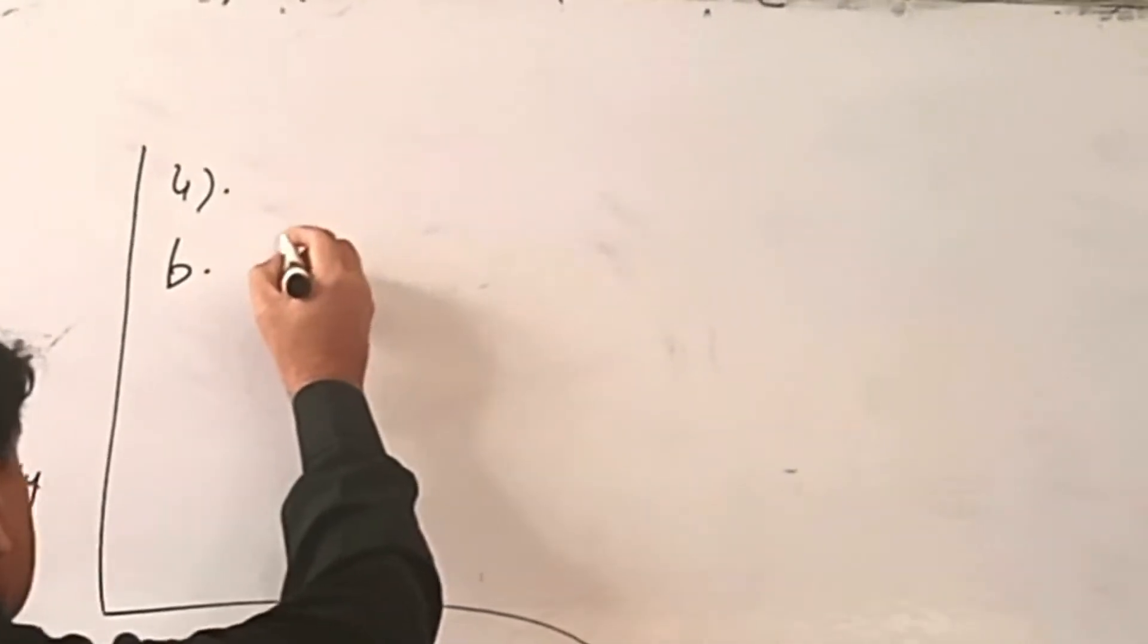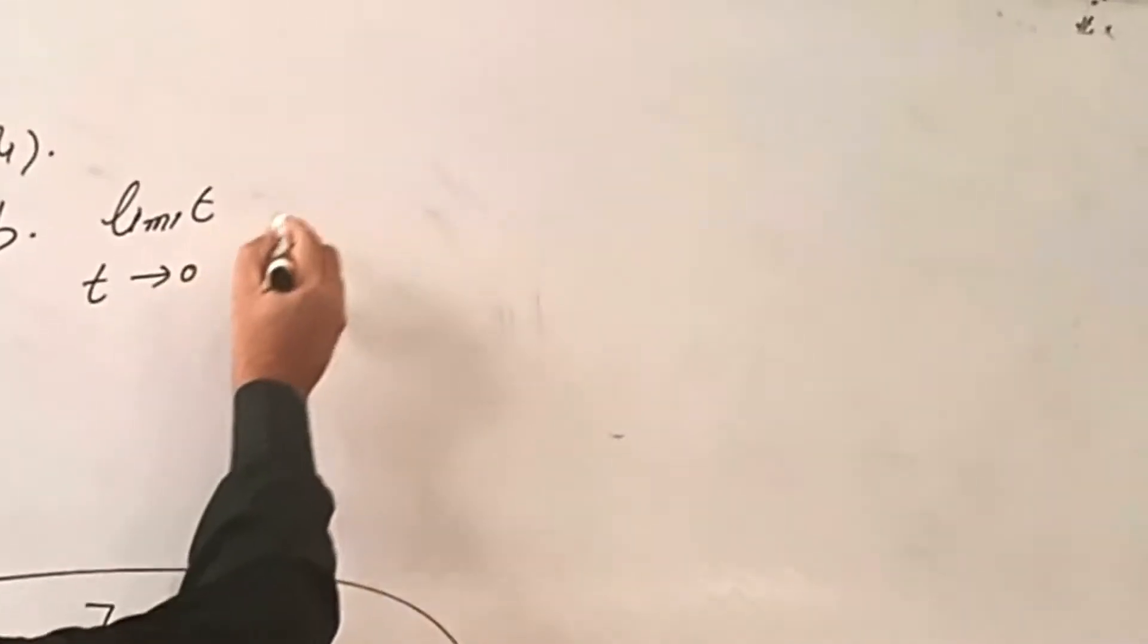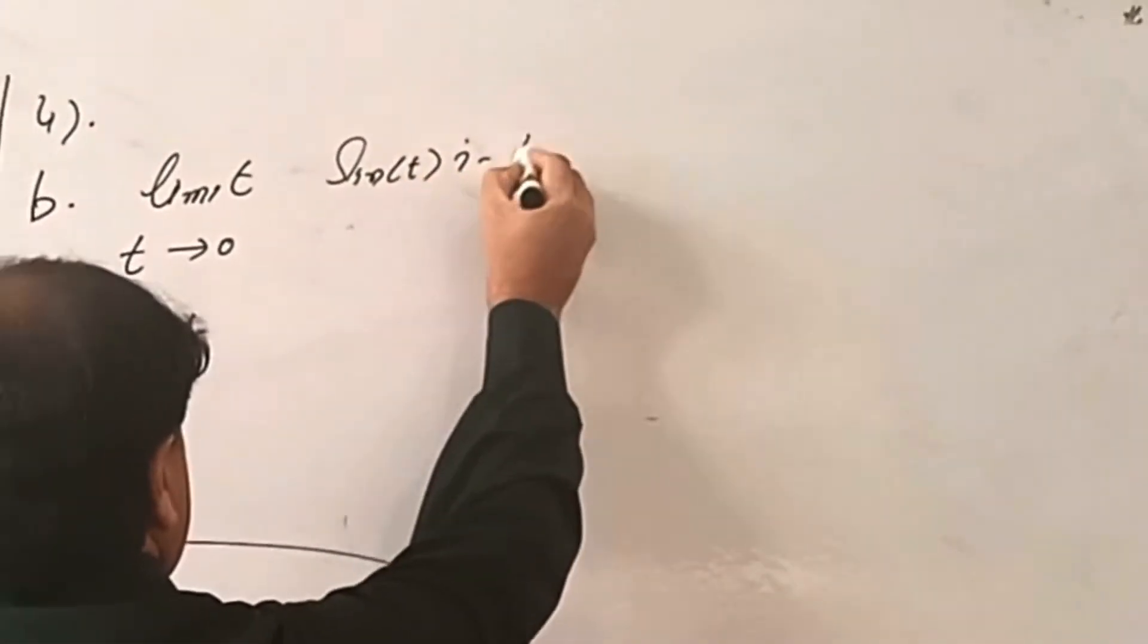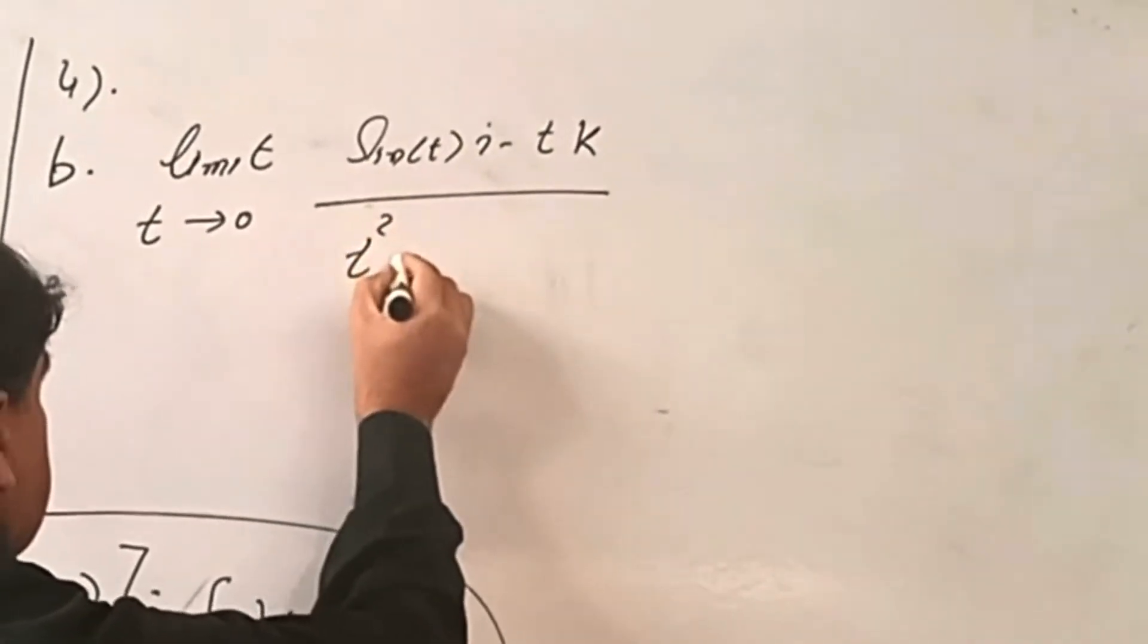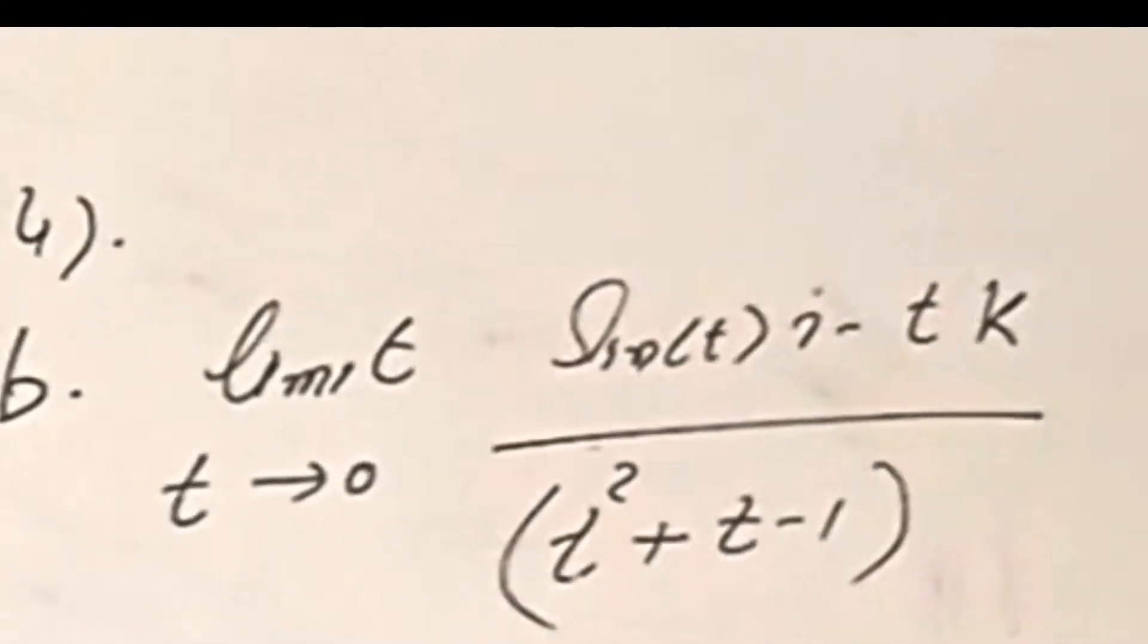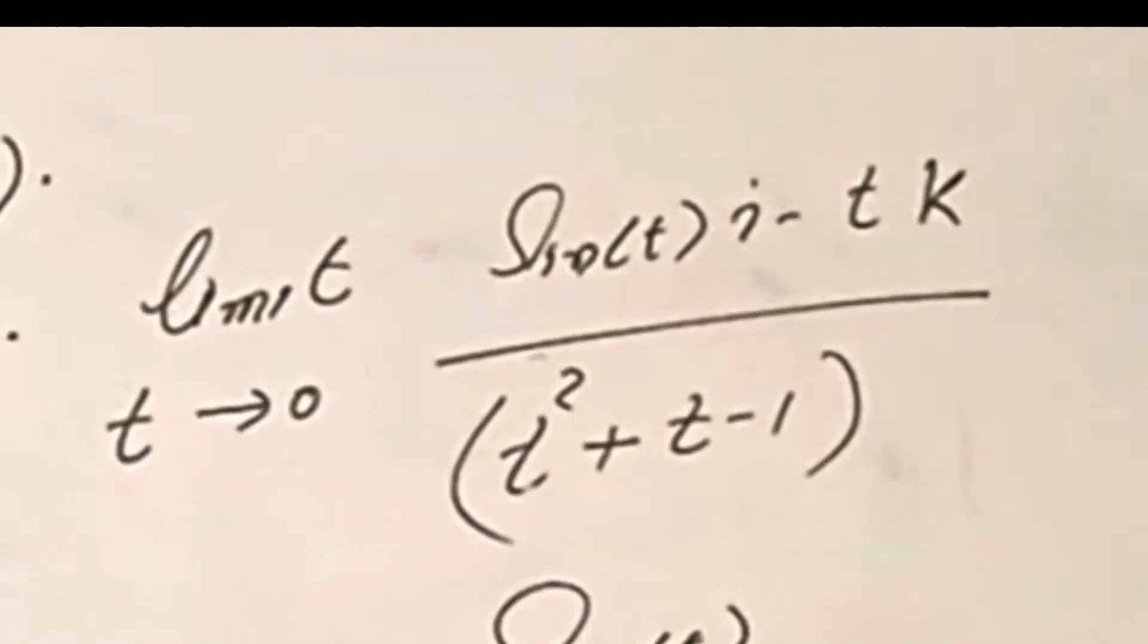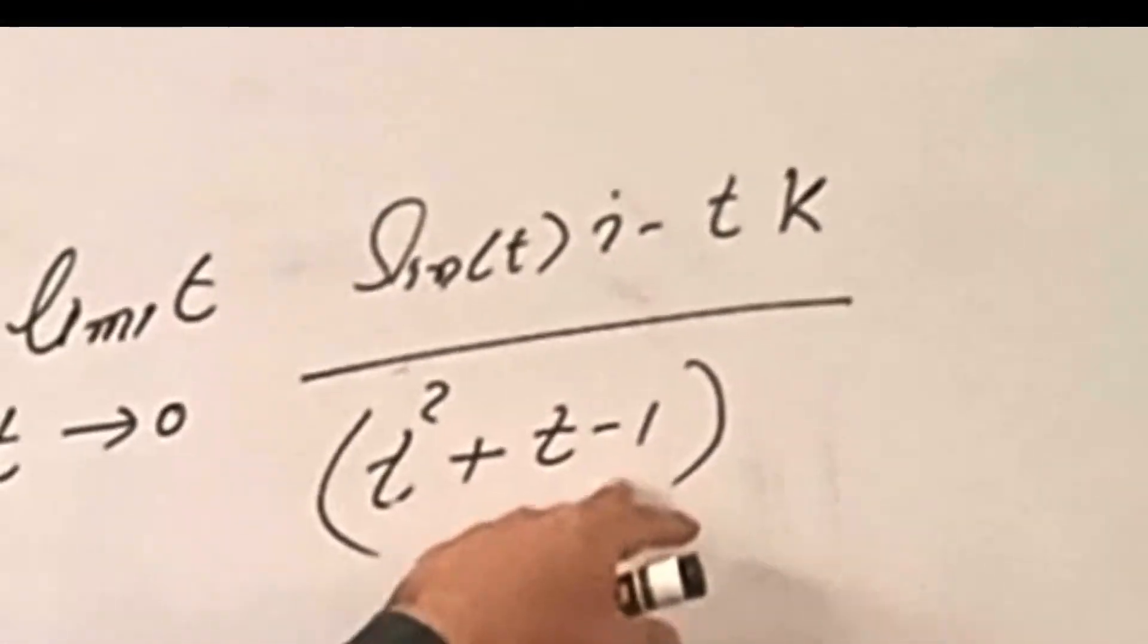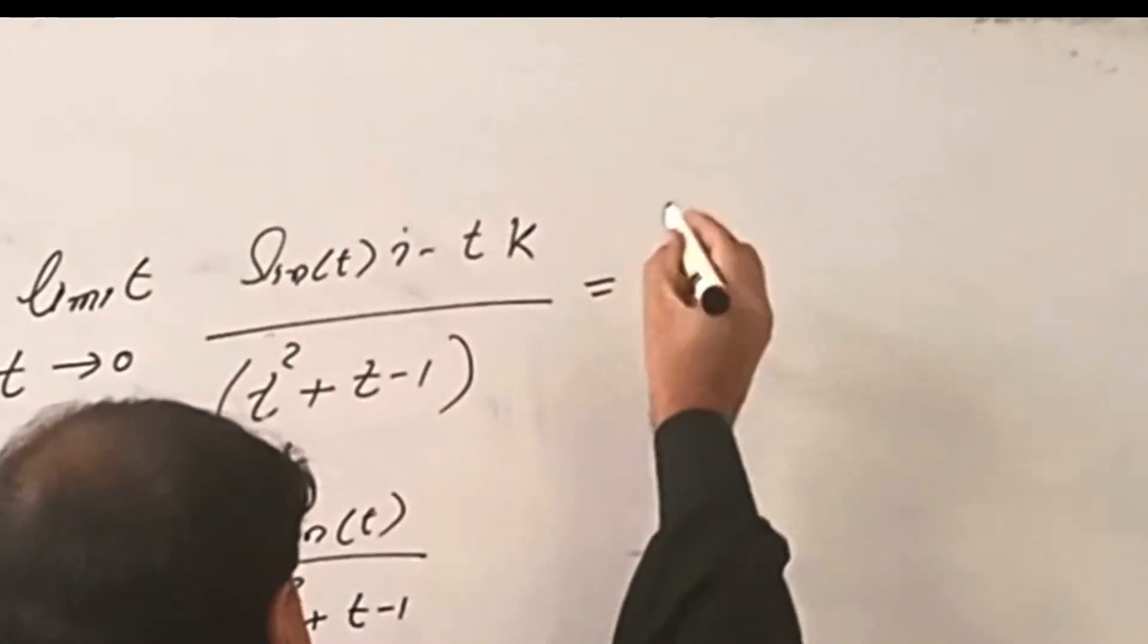Find the limit of the vector point function: limit t→0 of (sin(t)i - tk) / (t² + t - 1).